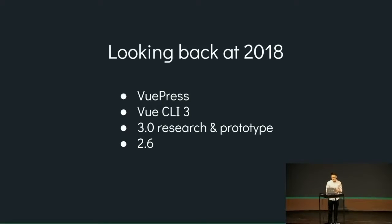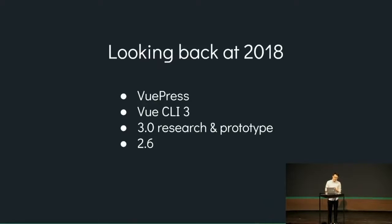VuePress is now powering most of our sub-project documentation. Vue CLI 3 was probably the biggest release for us in 2018 — we tried to standardize the toolchain, provide a system people can extend while hiding as much complexity as possible, so if you just want sensible defaults you can get started fast. We also started researching and prototyping for 3.0, and we plan to post public RFCs very soon — stay tuned.